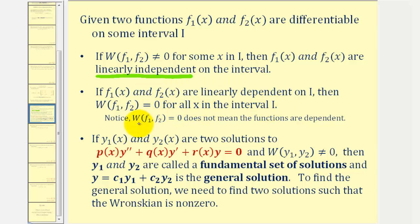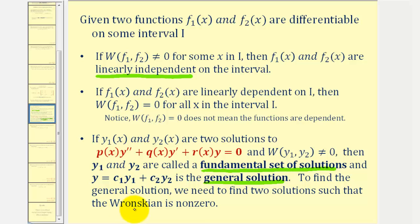We also want to find the values of c₁ and c₂ that satisfy the definition for linearly dependent functions. The reason we care so much about linearly independent functions is that if y₁ and y₂ are solutions to a linear second-order homogeneous differential equation and the Wronskian doesn't equal zero, then y₁ and y₂ are called the fundamental set of solutions, and y = c₁y₁ + c₂y₂ is the general solution. So to find the general solution, we need to find two solutions such that the Wronskian is non-zero.